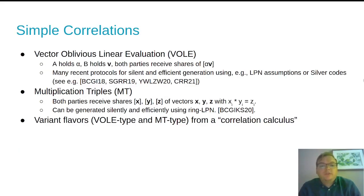Now, the simple correlations we're going to use are vector oblivious linear evaluation, vector OLE or VOLE, which machinery has been studied a lot recently and improved for the purpose of a new branch of VOLE-based zero-knowledge proofs, as well as multiplication triple style randomness, which is much more classical, but only recently has been able to be generated silently and efficiently, based on ring LPN.